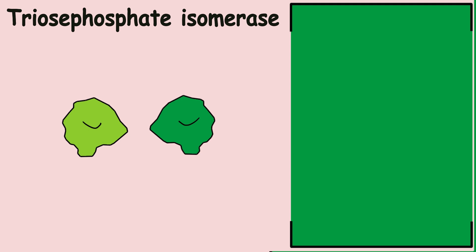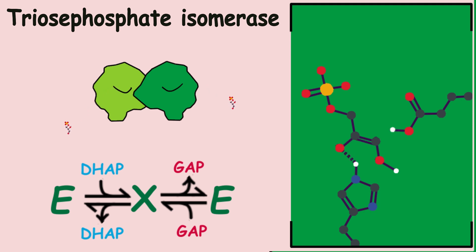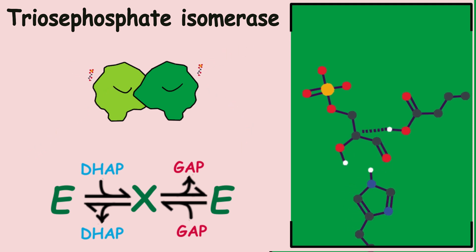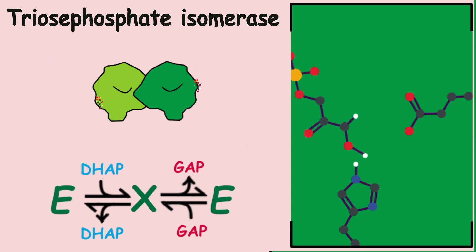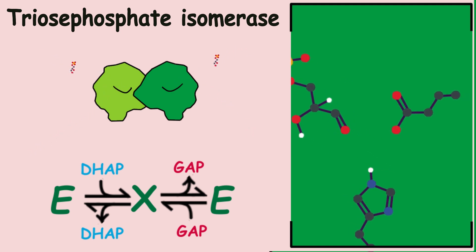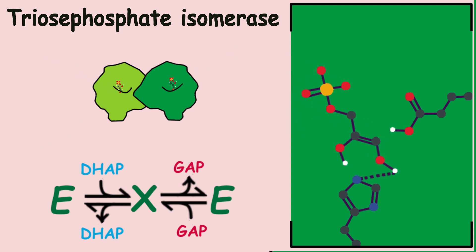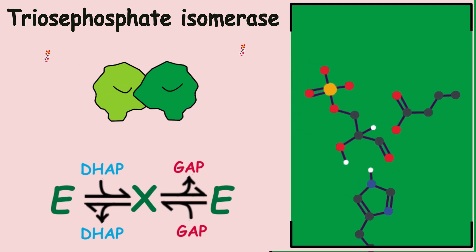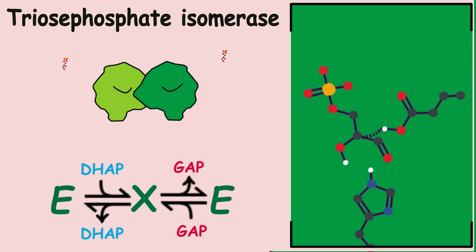The next protein is triosephosphate isomerase; two of them bind to form a dimer. At this stage, glucose is already split in two. To save energy and molecules, it would be more efficient for both molecules to follow the same metabolic pathway, so this protein converts dihydroxyacetone phosphate into glyceraldehyde-3-phosphate. Triosephosphate isomerase is considered a perfect enzyme — its catalytic rate is at its maximum, and the reaction occurs immediately when the substrate reaches the protein.